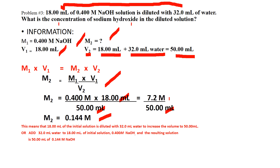7.2 divided by 50 gives 0.144 molar. So the meaning is: add 32 mL of water to 18 mL of 0.4 molar NaOH, and the resulting solution is 50 mL with a concentration of 0.144 molar.